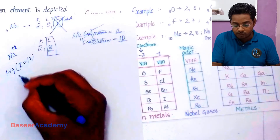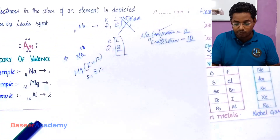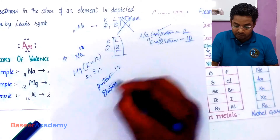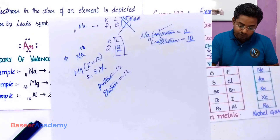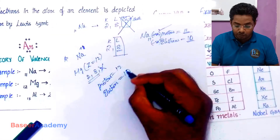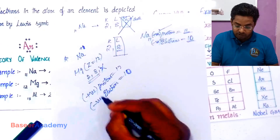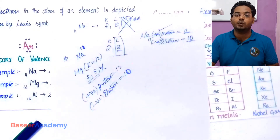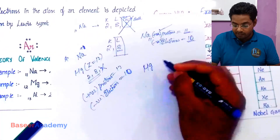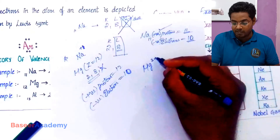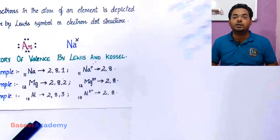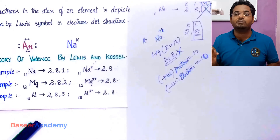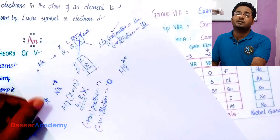Magnesium has 12 protons and 12 electrons with an electronic configuration of 2, 8, 2. After it loses two electrons, it is left with 10 electrons. The positive charge is greater — 12 minus 10 is 2 — so the positive charge is greater by 2. When magnesium loses two electrons, it becomes the Mg2+ ion. That is how we say that when an atom loses electrons, it becomes a positive ion.